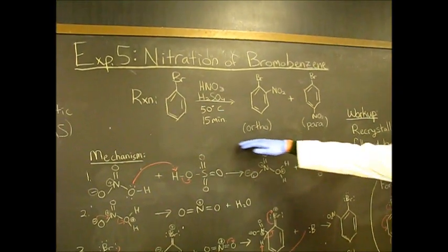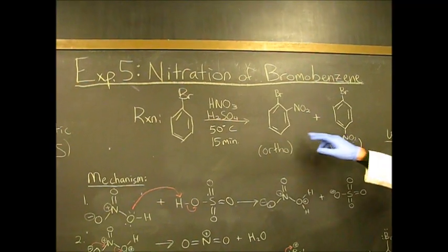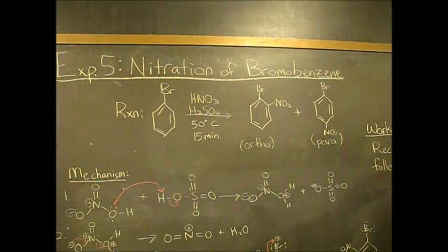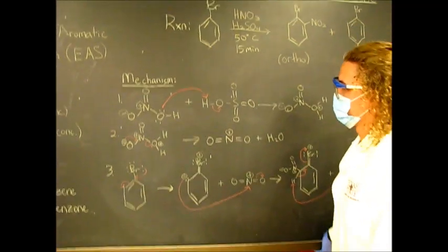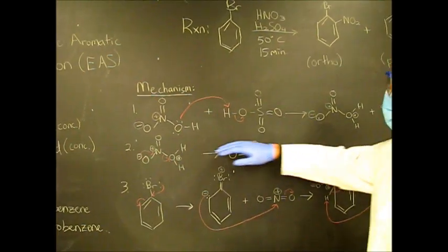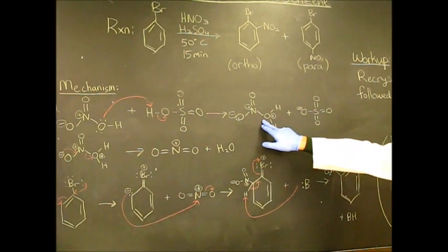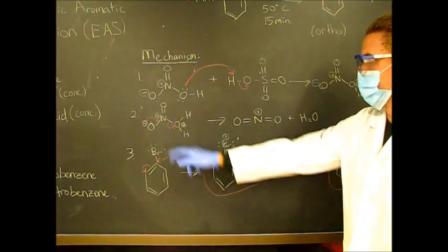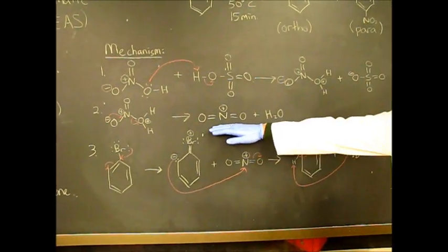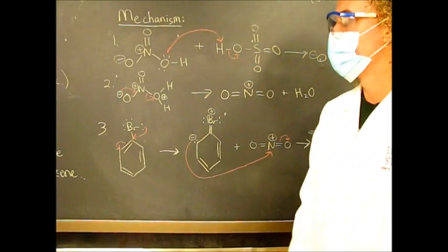This is the reaction right here. As you can see, you'll get the ortho product and the para product. The way this works is nitric acid and sulfuric acid react to form this cation. Water will then leave as it's a good leaving group to form the nitronium ion. So this is where you can get two products.